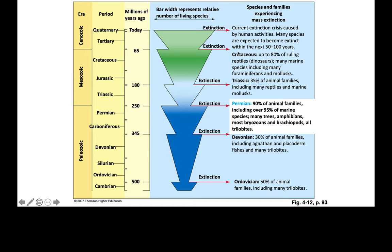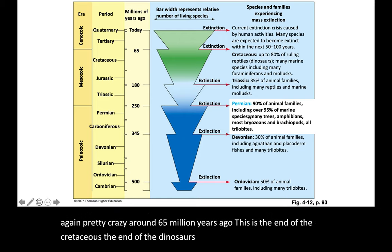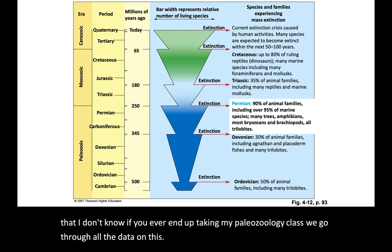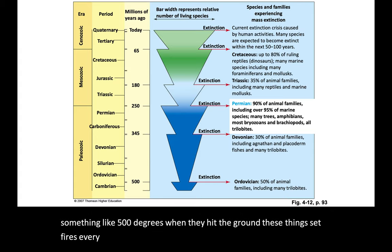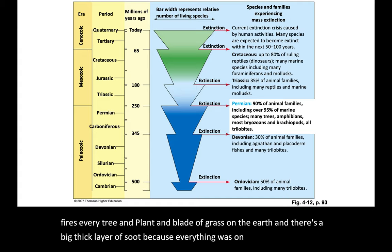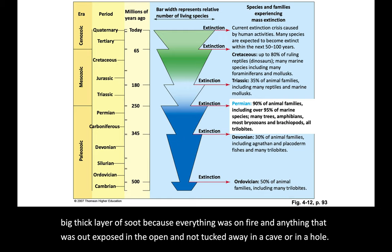Around 65 million years ago, this is the end of the Cretaceous, the end of the dinosaurs. This is that large impact from space. Essentially, it liquefies rock and turns it into a spray of red-hot glass beads. They cover the Earth and then rain down, and because they're still something like 500 degrees when they hit the ground, these things set fire to every tree, plant, and blade of grass on Earth. There's a big thick layer of soot because everything was on fire, and anything exposed in the open would have been annihilated right there and then. A couple of things made it through — mostly small animals that could live in little holes.